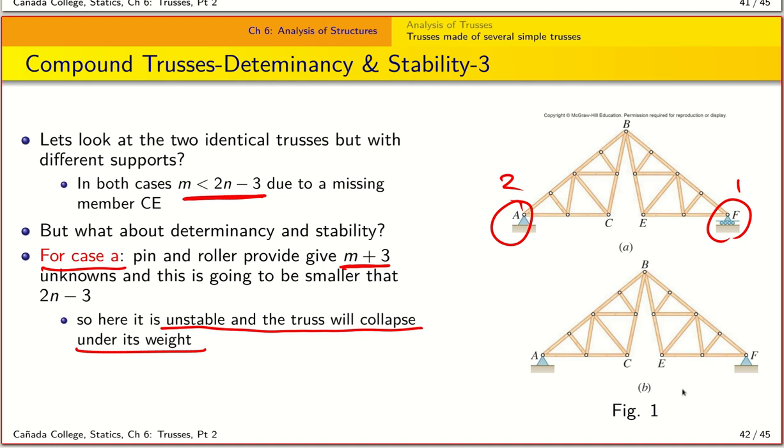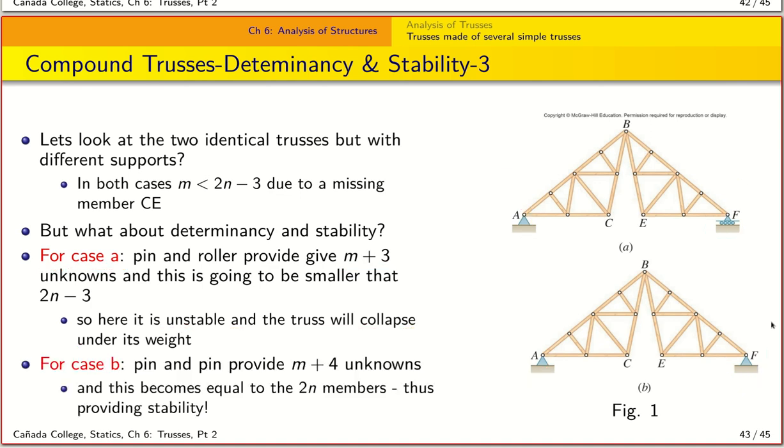Now, before we analyze truss B, why don't you pause the video and think about it and noting that we have now two forces each out here. So what happens now is that you have four unknowns from the reaction forces at A and F. And so we have M plus four as a total number of unknowns. And now the question is that if we actually go through this truss, we will find that M plus four is actually equal to two N. And so that means we have the total number of unknowns being equal to the number of equilibrium equations.